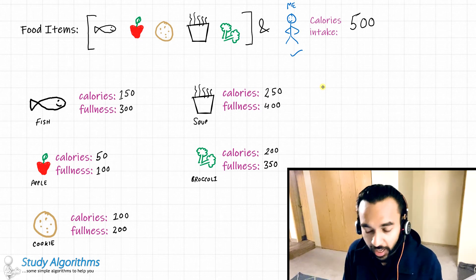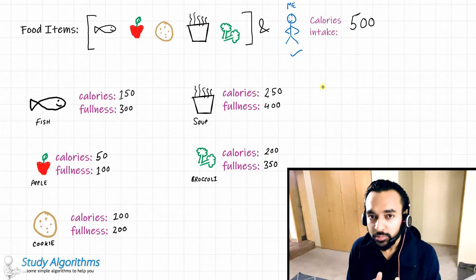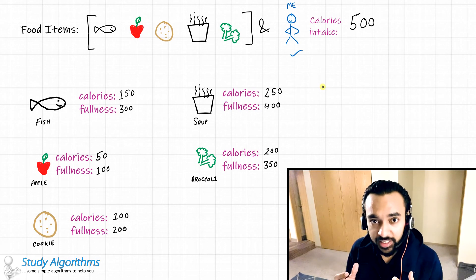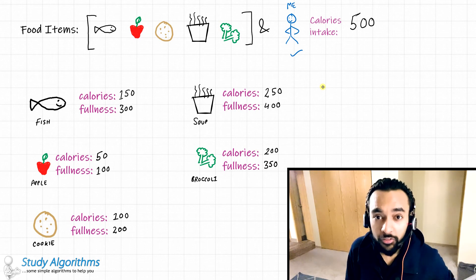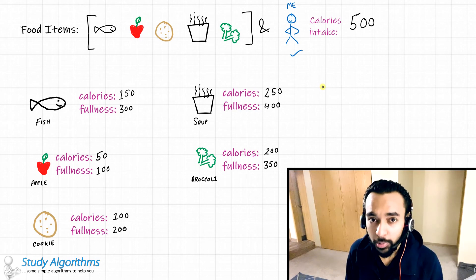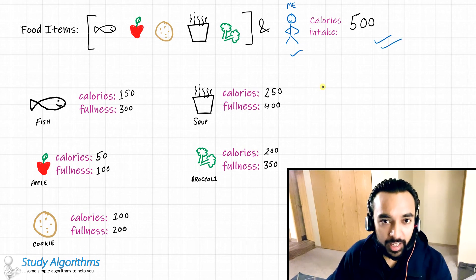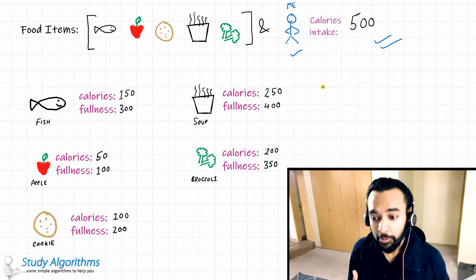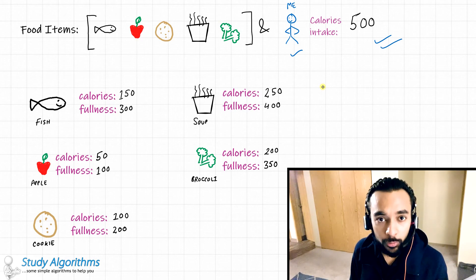Here is the scenario: you have a couple of food items to choose from. When you are eating food, every food item has some calories and a certain amount of fullness that you feel after eating it. For example, you may feel really full after eating a bowl of rice, but not full at all after having a chocolate bar. You are a calorie-conscious person whose maximum intake for the day is just 500 calories, but you want to feel as full as possible because a hungry person is an angry person.